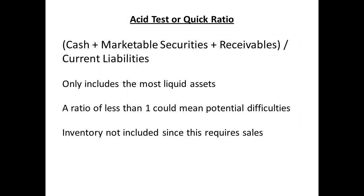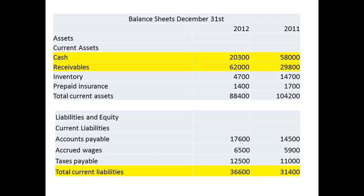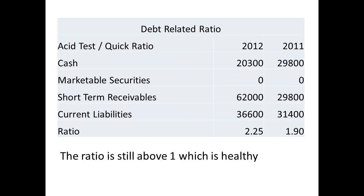A measure often used instead of the current ratio is the acid test or quick ratio. The quick refers to only considering those assets that are very easily turned to cash — cash itself, marketable securities, and receivables. Inventory is not considered since this means selling goods and obtaining cash, and you don't know how long the sale is going to take. A ratio of less than 1 could indicate difficulties. The figures, obtained from the balance sheets, reveal a small increase from 1.90 in 2011 to 2.25 in 2012. Both are above 1, which we can regard as healthy.